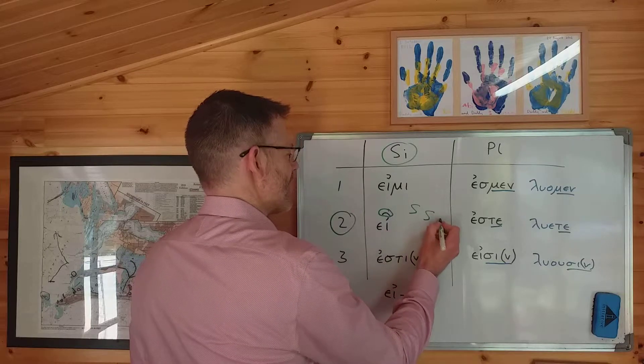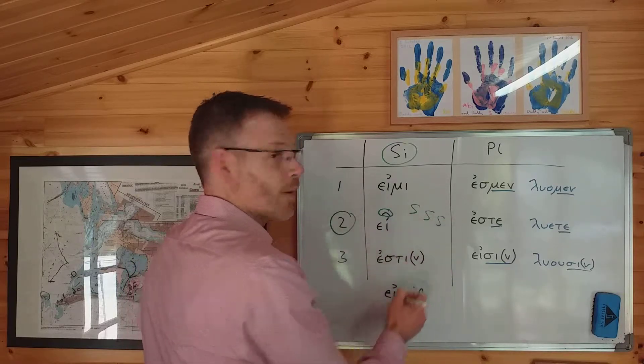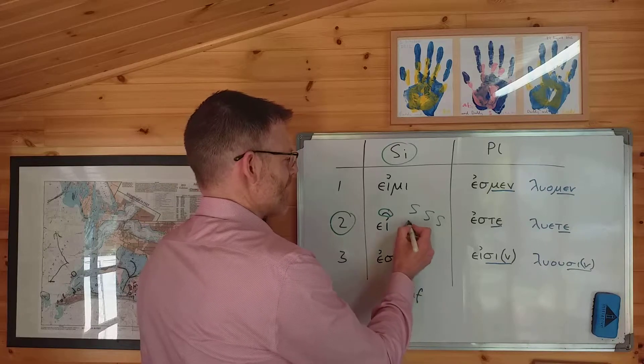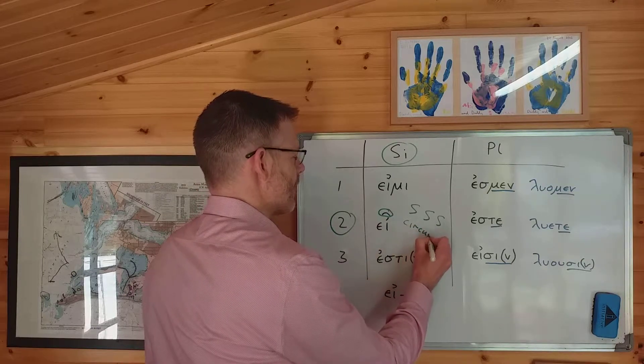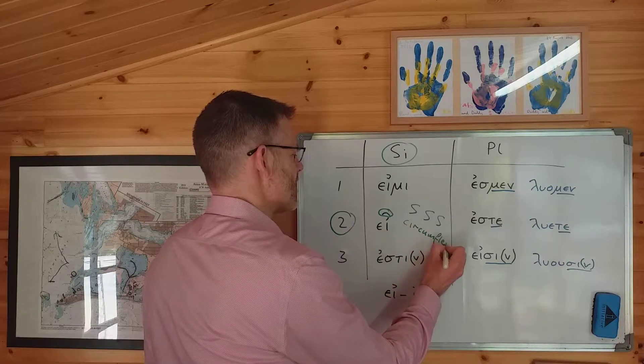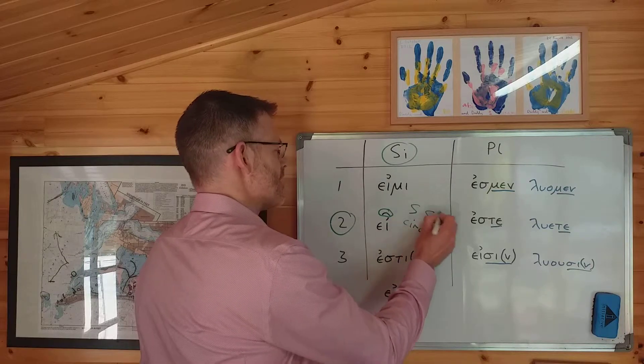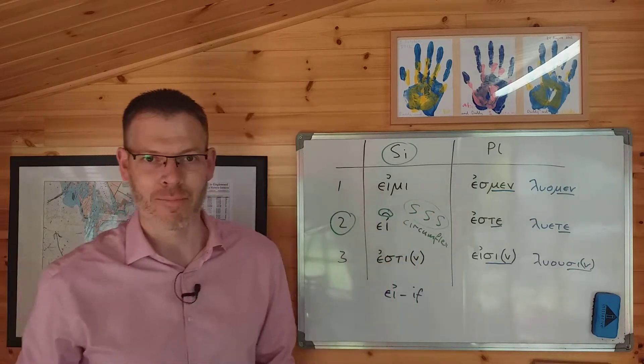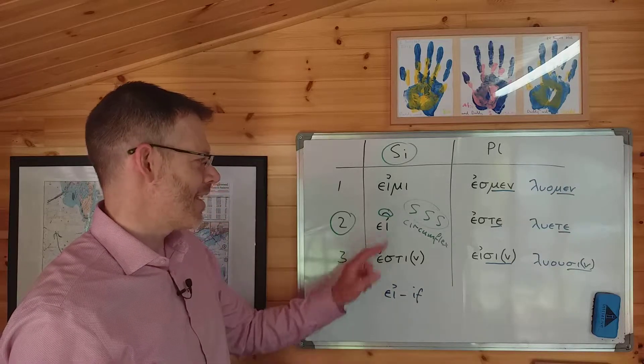What could be more straightforward than that? The second singular of εἰμί has the circumflex. Second singular, well, squiggle if you like. My kids call it a squiggle. It's technically called a circumflex, but it sounds like an S, and maybe the S sounds will help you remember that that's where it belongs. Not here, here.